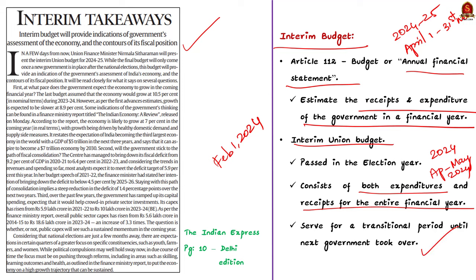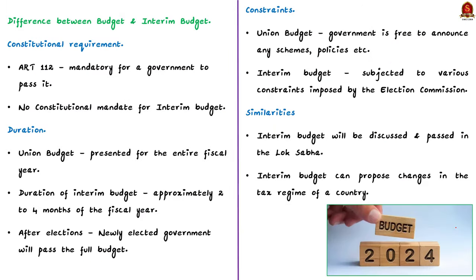Now let us see how the interim budget differs from the regular budget. First, regarding constitutional requirement: according to Article 112, it is mandatory for a government to pass the union budget, but there is no such compulsion for an interim budget. In fact, a petition was filed in the Supreme Court seeking to quash the interim budget as there is no constitutional provision for it. Second, regarding duration: the union budget is for the entire financial year, but the interim budget covers approximately two to four months of the fiscal year, after which the newly elected government passes the full budget.